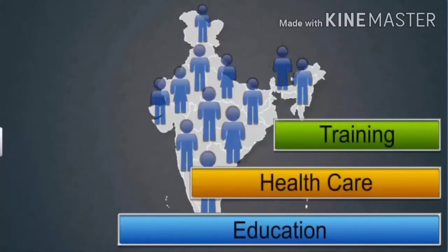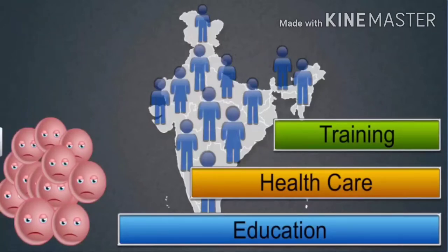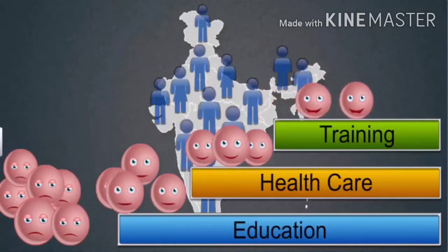Education, health care, and training make a population an asset to a country. Thus, there are three factors that determine the quality of a nation's population. Uneducated, untrained, and unhealthy people find it difficult to take care of themselves and can do little for society. Thus, they are the nation's liability.